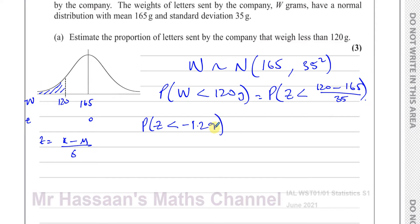We need to find P(Z < −1.29). The table we have for Z values doesn't include negative Z values — it starts from zero. Our Z value here is −1.29, so we use the symmetry of the bell curve to work around this.